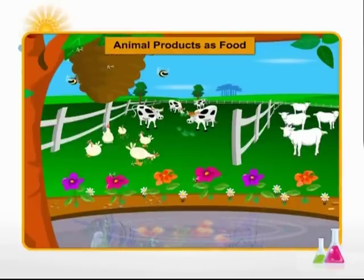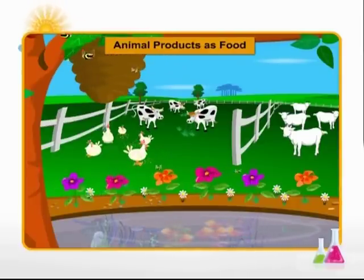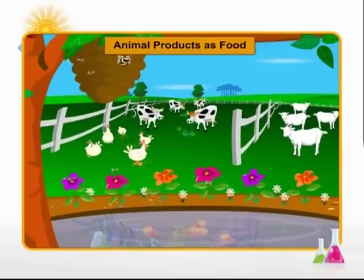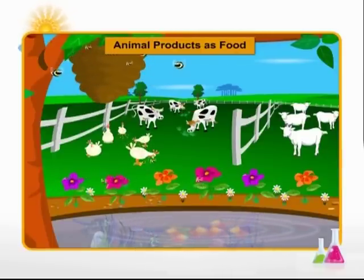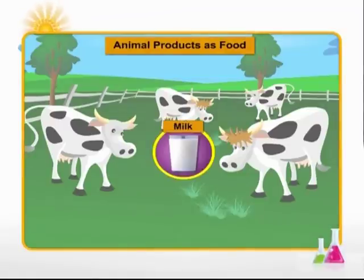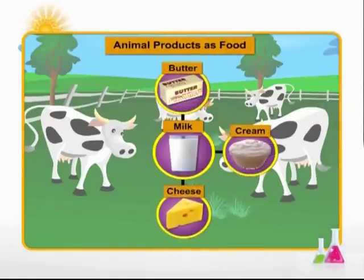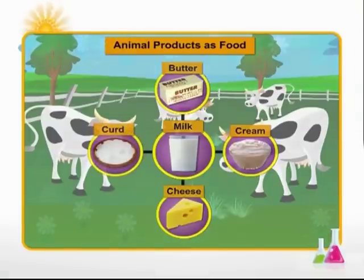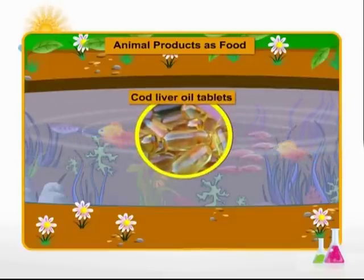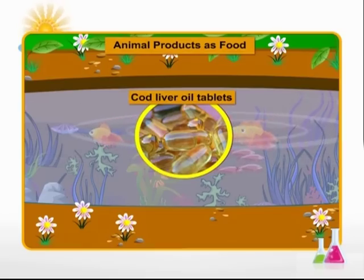Like plants, animals do serve as sources of certain foods. Foods like milk, eggs, meat, chicken, fish, prawns, pork, and beef are obtained from animals. Animals like cows, goats, and buffaloes give us milk. Milk and milk products like butter, cream, cheese, and curd are used the world over. Highly nutritious oil like cod liver oil is obtained from fish. It's good for our health.